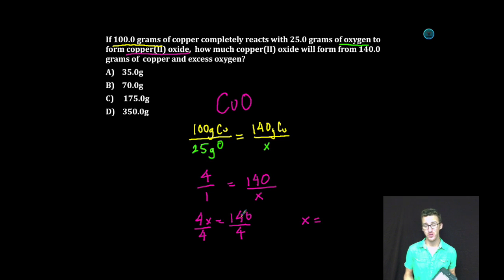Now, 140 divided by 4 might still be kind of tricky. So what I like to do is divide 140 by 2, boom, 70, and then divide 70 by 2 again to give me 35. So x equals 35 grams of oxygen.